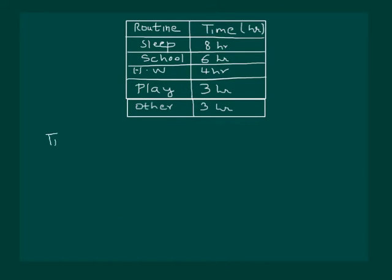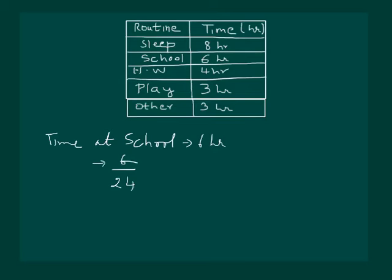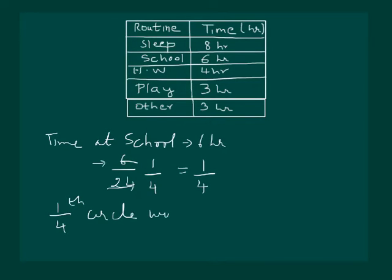Similarly, time spent at school is 6 hours. To find the proportion, we know that he is spending 6 hours out of 24 hours, that is 1/4. So one fourth of the circle will represent time spent at school.